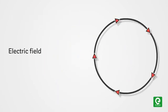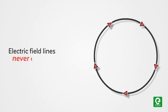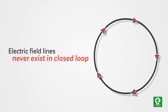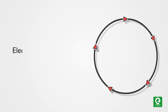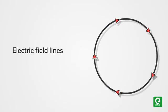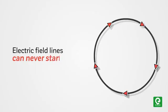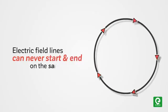Electric field lines never exist in a closed loop, because electric field lines can never start and end on the same charge.